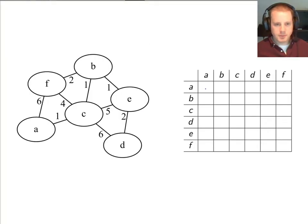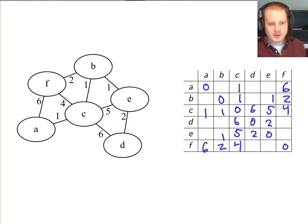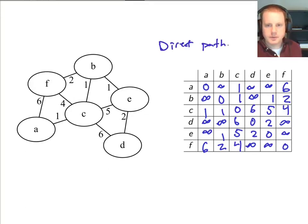Starting with this example graph, we fill it in with the original adjacency matrix. That means all zeros along the diagonals, since any node to itself has distance zero, and then we fill in all the edges. One way to check: there are nine edges in this graph, so there should be nine numbers filled in above the diagonal — one, two, three, four, five, six, seven, eight, nine. All the rest will be infinities. So what we have here is just the direct paths from the adjacency matrix.